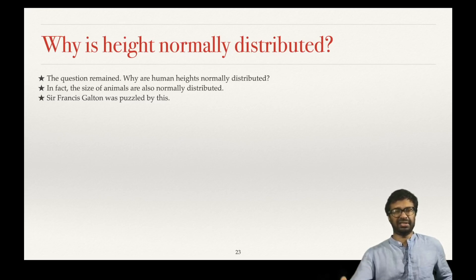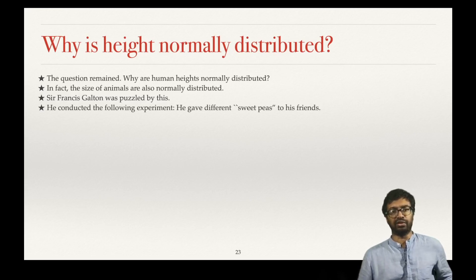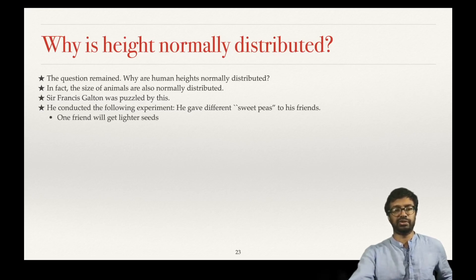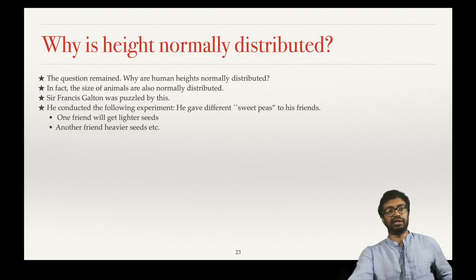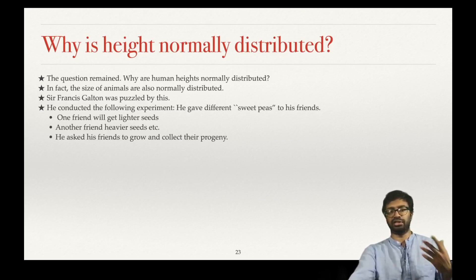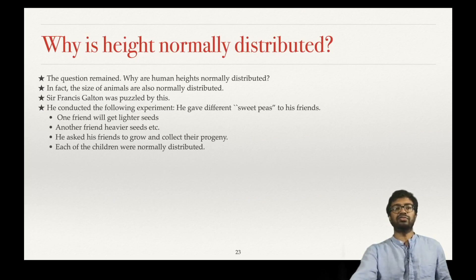This was Francis Galton, but he was curious to find the answer to why height is normally distributed. What he did was conduct the following experiment: he collected different sweet peas and gave different kinds to his friends — one friend lighter seeds, another heavier seeds — and asked his friends to grow them. He then collected the children, and each group of children was normally distributed.